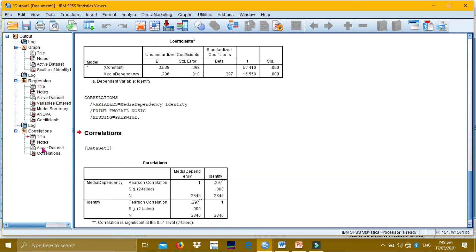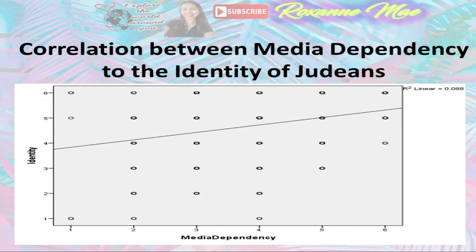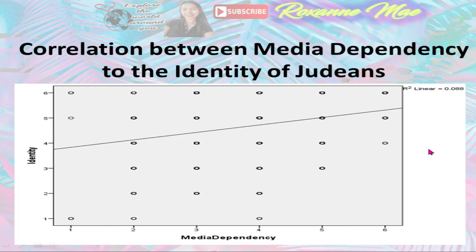A correlation table will appear. Now, proceeding to the analysis: this figure shows the scatterplot with regression line between media dependency as the independent variable and perceived identity of Judeans as the dependent variable. The scatterplot and regression line indicate that as the extent to which Judeans apply media in their lives increases, their sense of identity tends to increase as well, suggesting a positively sloped regression line.